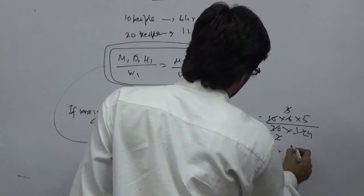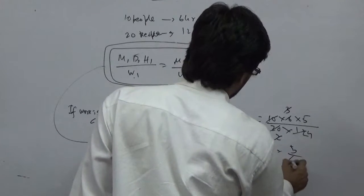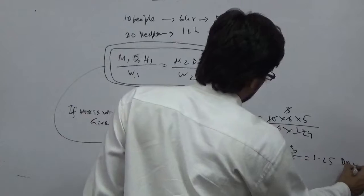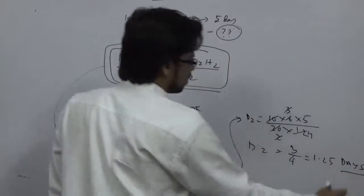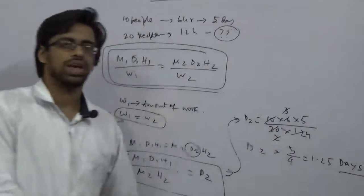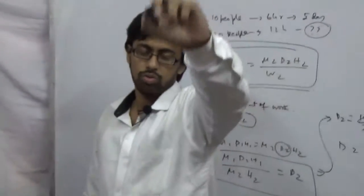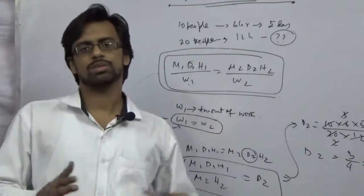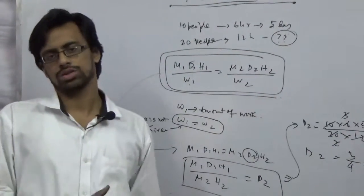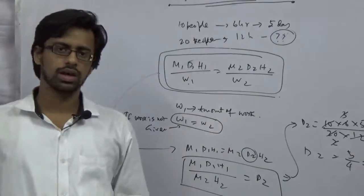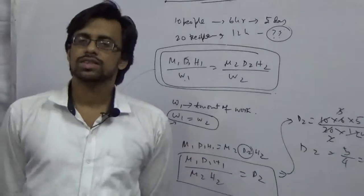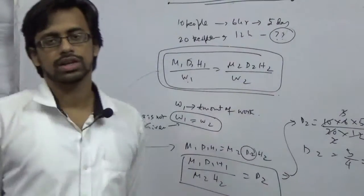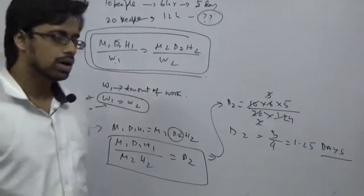So D2 is 5 by 4. You get 1.25, which means 1 day and 0.25. 0.25 of 24 hours is 6 hours. So 1 day and 6 hours — that is 30 hours total time.